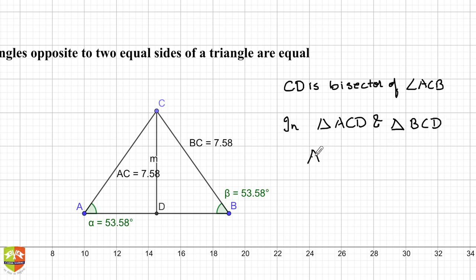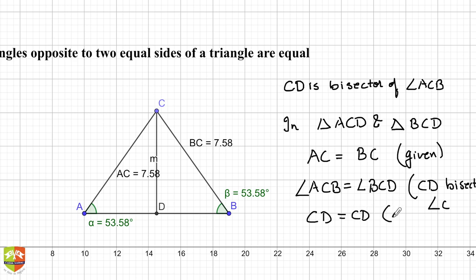We know that AC is equal to BC - it's given. We also know that angle ACD is equal to angle BCD because CD is the bisector. CD bisects angle C. What else? CD is equal to CD in both cases - they are common.